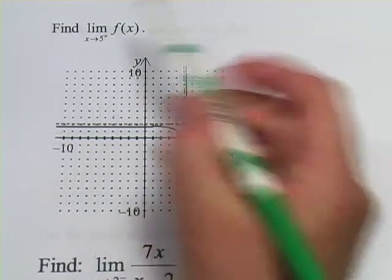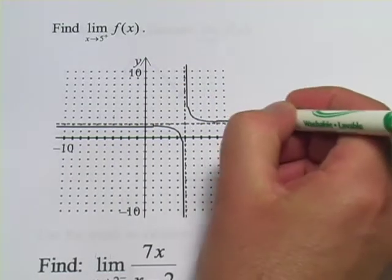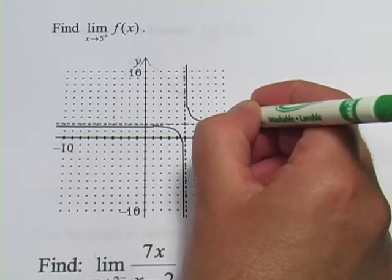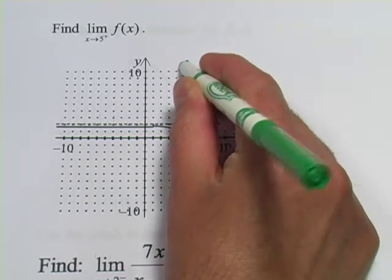From the right, from the plus side of the graph. So, if you're on this graph and you're approaching from this direction, what happens is you get closer and closer to 5, you start shooting up.